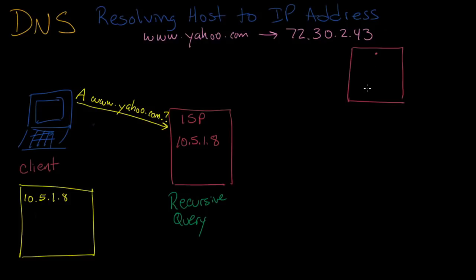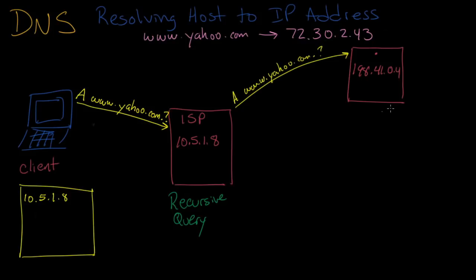That someone else is going to be a DNS server for the top-level root zone. Let's say its IP address is 198.41.0.4, which is an actual IP address of one of the root DNS servers. Your ISP is now going to forward your request to this DNS server and ask the same question: what is the address for www.yahoo.com? Most likely this name server is not going to know the answer — it's not responsible for knowing the answer to any query outside of its zone. It's going to respond saying: I don't know the answer; why don't you go ask the name server for the .com domain? Starting from the right-hand side, it adds on one piece and points to the next DNS server to ask.